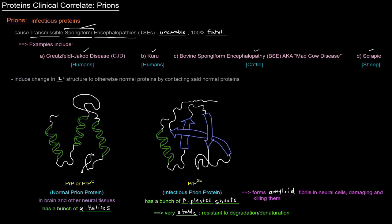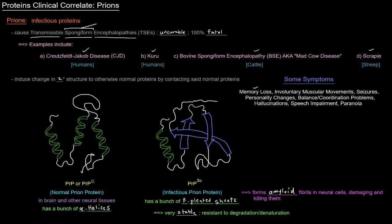And so some of the symptoms, of course, because it affects the nervous system are as follows: memory loss, involuntary muscular movements, seizures, personality changes, balance and coordination problems, hallucinations, speech impairment, paranoia, all these different things as far as the nervous system goes.